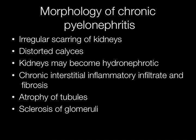In chronic pyelonephritis there is scarring of the kidneys, distortion of the calyces, and the kidneys may become hydronephrotic. Histologically there is chronic interstitial inflammation and fibrosis with atrophy of tubules and sclerosis of glomeruli.